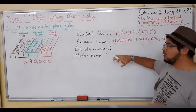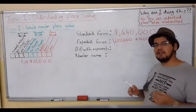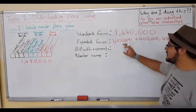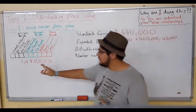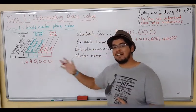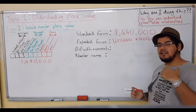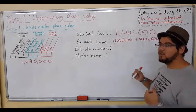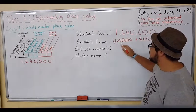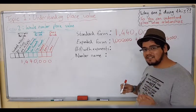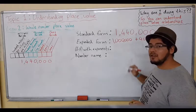Now let's do expanded form with exponents. In expanded form you're taking each number as a whole and adding to the next. With exponents, if we remember from patterns in the previous lesson, one million is ten to the power of something. It depends on how many zeros are being used. Let's recall the pattern: ten to the power of two is a hundred — there's the number two and there are two zeros.